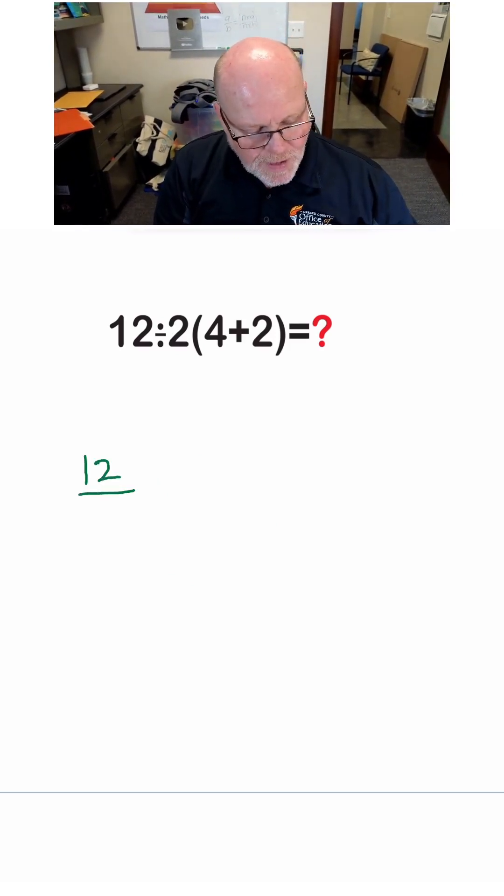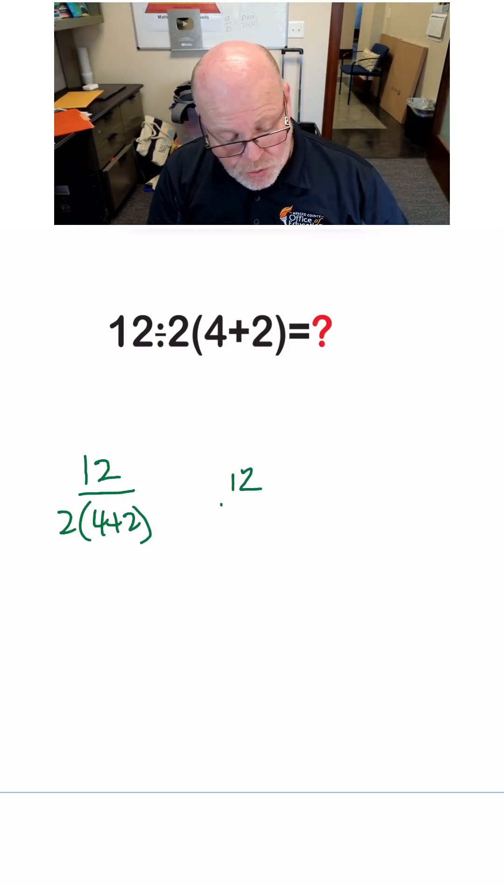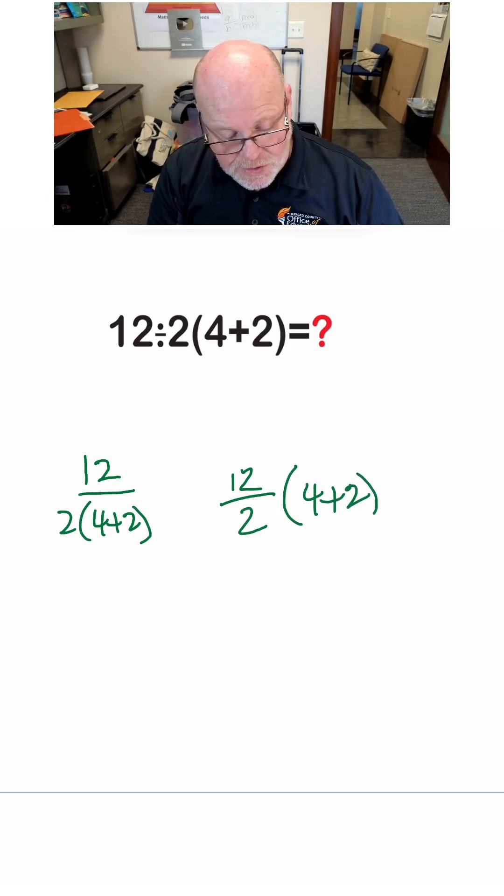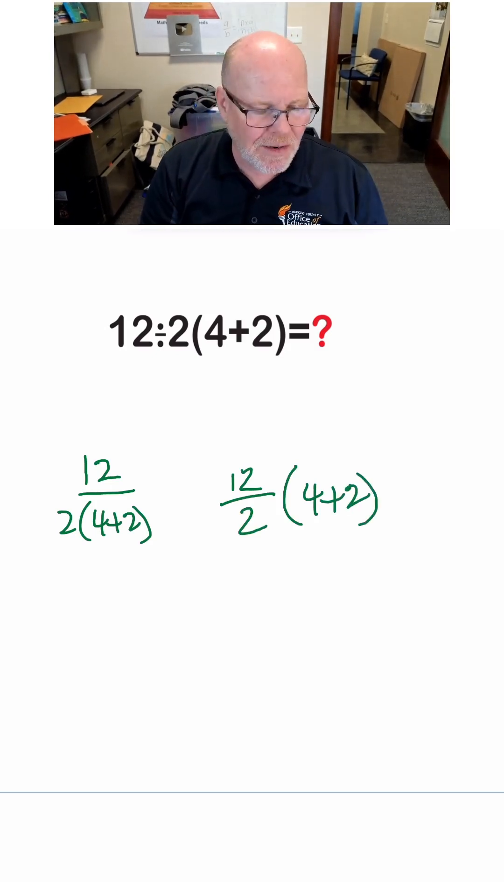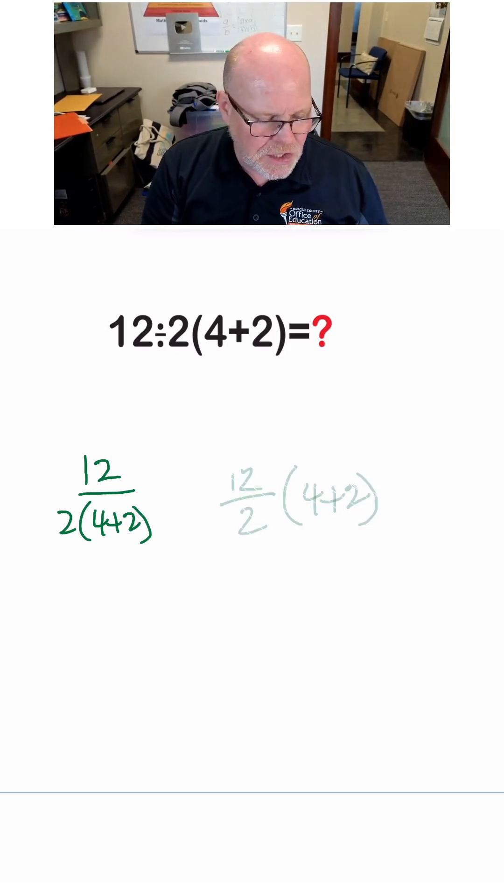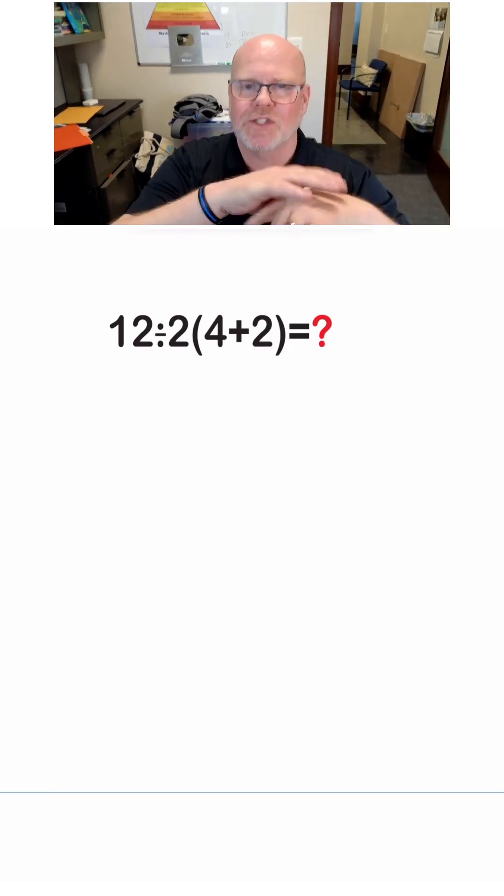Do we really mean 12 divided by 2 times the quantity 4 plus 2? Or do we mean 12 divided by 2 times the quantity 4 plus 2? There's just a lack of clarity, and mathematicians are rarely going to ever see a string like this.